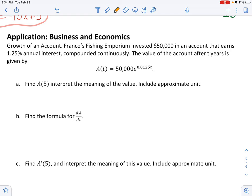So if you want to know how much money Franco's fishing emporium will have after 10 years, we're going to plug in 10 into this function. So what do they want first? They want you to find A of 5 and interpret the meaning of the value.